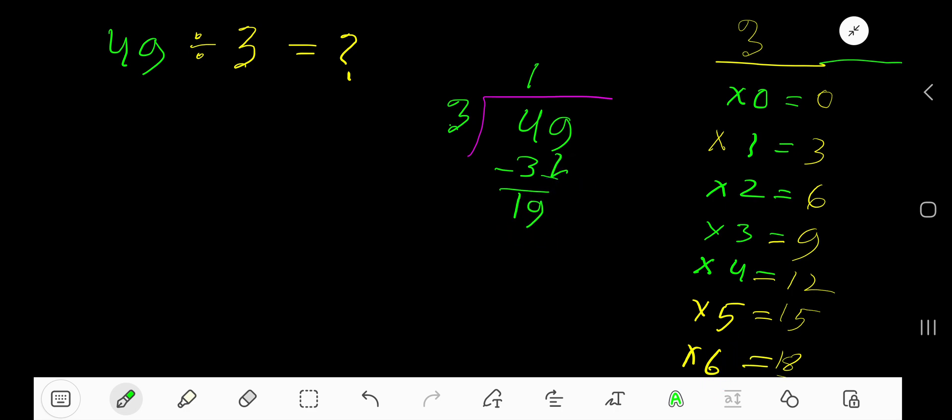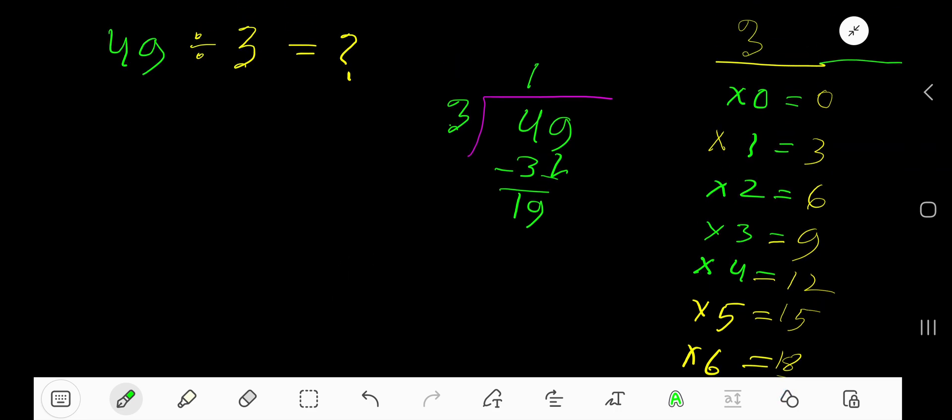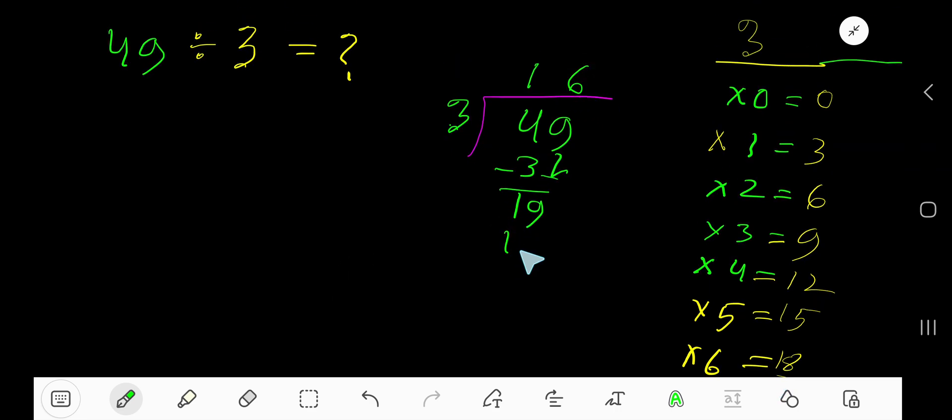3 goes into 19, how many times? Look, 7 times 2 is 21, which is greater, so 6 times. Write 6, 6 times 3, 18. Subtract, you are getting 1. So our answer is 16, remainder 1.